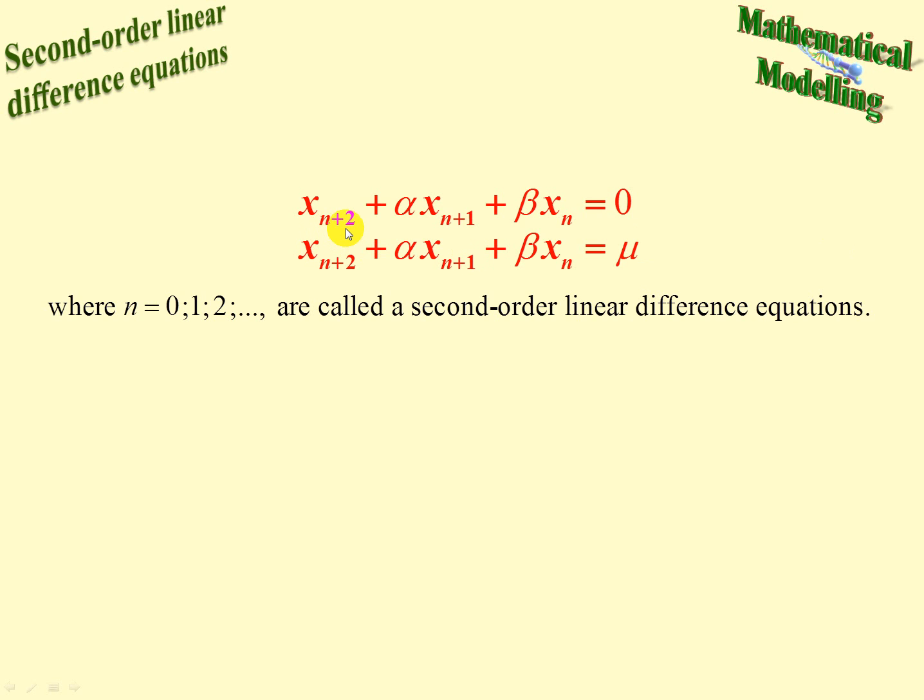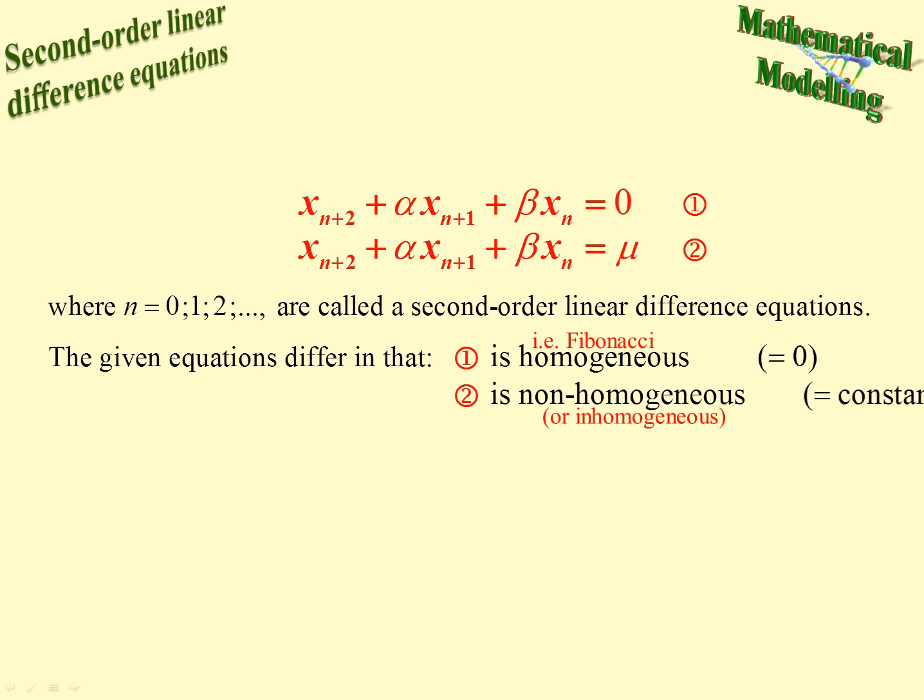So in this case we have x sub n plus 2, x sub n plus 1, and x sub n. These two only differ from the fact that this one is equal to zero and this one is equal to a constant. The first one is called a homogeneous equation because it's equal to zero, and that's what the Fibonacci sequence is. The second one is non-homogeneous because it's equal to a constant.